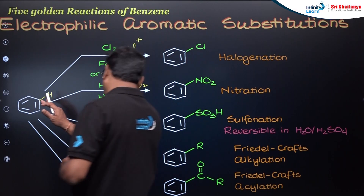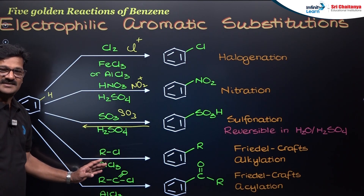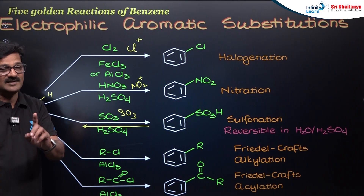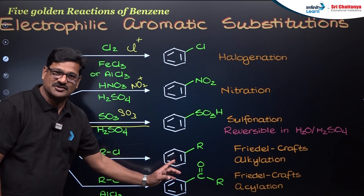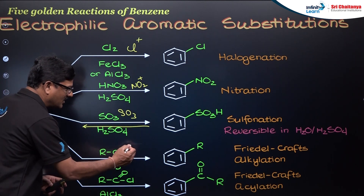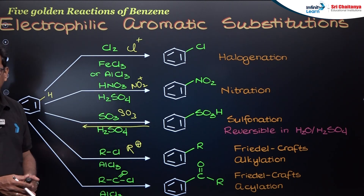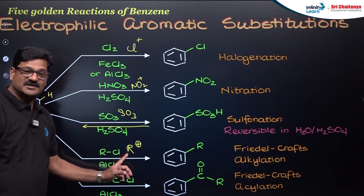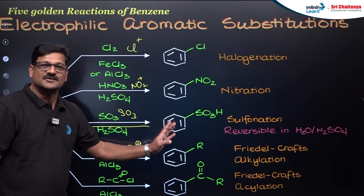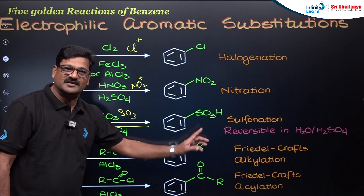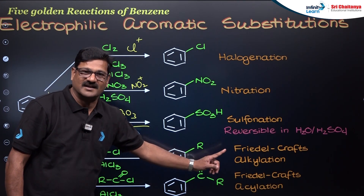When benzene is treated with alkyl chloride in the presence of AlCl₃, which acts as a Lewis acid, you get alkylation. Here, the alkyl carbocation is formed with rearrangement — the electrophile is the alkyl carbocation — and alkylated benzene is formed. This is called Friedel-Crafts alkylation.